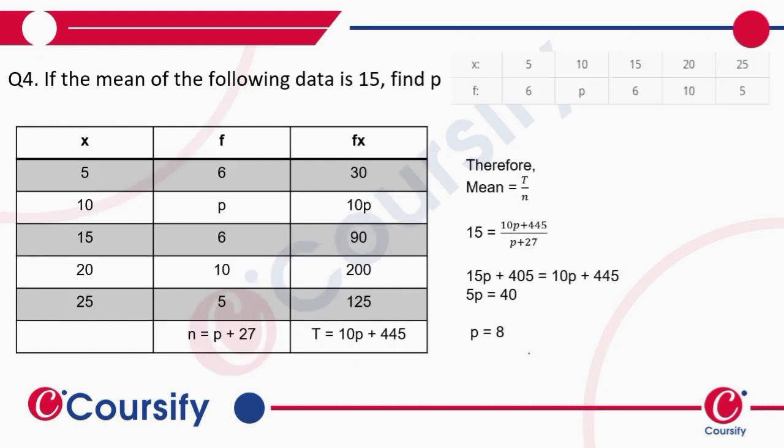If the mean of the following data is 15, find p. This is a similar question. We have five observations, p is here, and we have to find p.